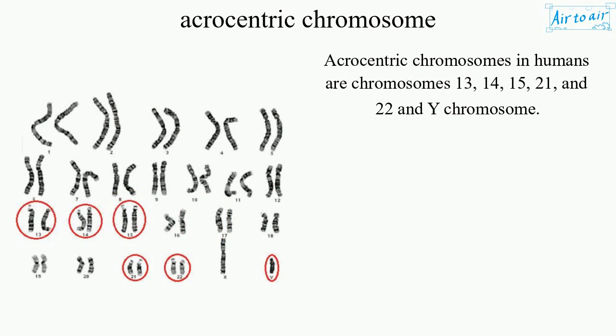Acrocentric chromosomes in humans are chromosomes 13, 14, 15, 21, and 22, and the Y chromosome.